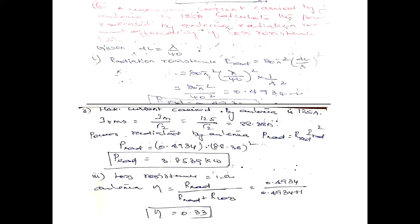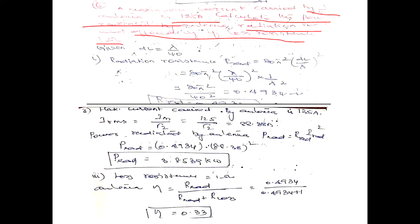The next problem: the maximum current carried by a lambda/40 antenna is 120 amps. The length of the antenna is lambda/40 and the current is 120 amps. You are asked to calculate the power radiated, radiation resistance, and efficiency if the loss resistance is equal to 1 ohm. The radiation resistance formula is R_rad equals 80π² times (dl/lambda)².